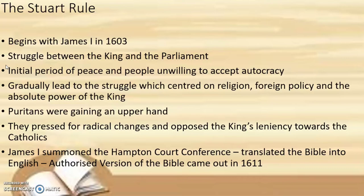Unlike Queen Elizabeth I, James was very lenient towards the Catholics, and this irritated the Puritans who were growing in power. Their resentment gave the struggle a religious angle. The Puritans wanted a remodeling of the church — they wanted to abolish episcopacy and establish Presbyterianism. James I was strongly against the abolishment of episcopacy, believing it would endanger monarchy itself. The Puritans submitted a Millenary Petition before King James I in 1603, containing all their demands. James summoned the Hampton Court Conference, but nothing came of it, and that resulted in the translation of the Bible into English and the publication of the Authorized Version of the Bible in 1611.